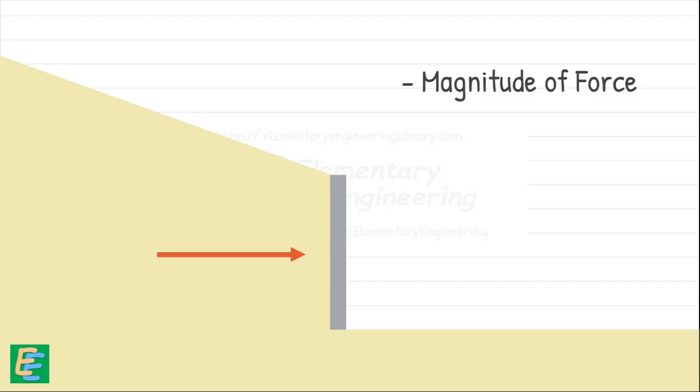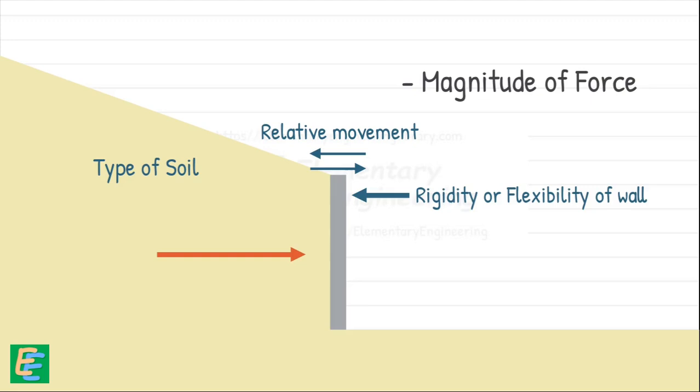The magnitude of this force depends on few more factors, like the rigidity or flexibility of the wall, the relative movement of the soil and structure, the type of soil the wall is supporting, and even the drainage conditions around it.